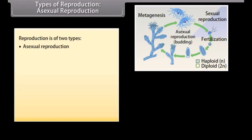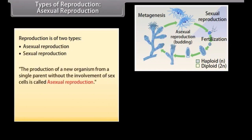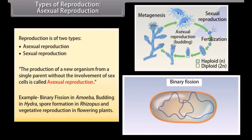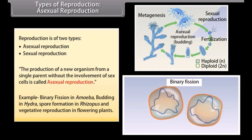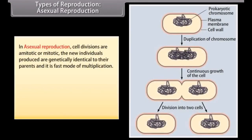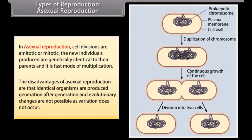Types of reproduction: asexual reproduction and sexual reproduction. The production of a new organism from a single parent without the involvement of sex cells is called asexual reproduction. Examples include binary fission in amoeba, budding in hydra, spore formation in rhizopus, and vegetative reproduction in flowering plants. In asexual reproduction, cell divisions are amitotic or mitotic, the new individuals produced are genetically identical to their parents, and it is a fast mode of multiplication. The disadvantages are that identical organisms are produced generation after generation and evolutionary changes are not possible as variation does not occur.